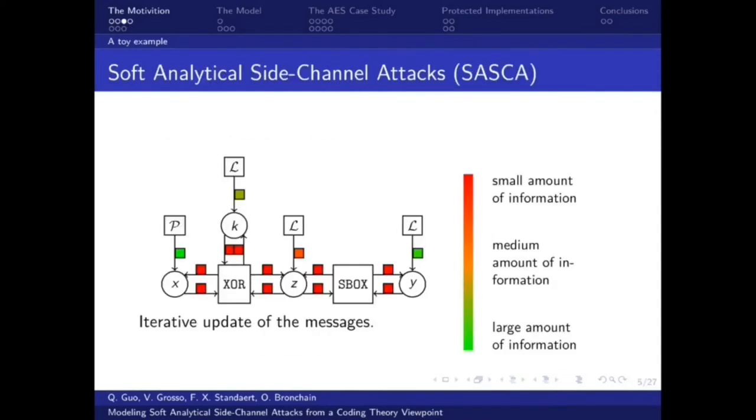Recently a very powerful side channel attack called soft analytic side channel attack was discovered. The basic idea is to iteratively update the messages. Let's also take this computational graph as an example. At the starting stage we may have a large amount of information on some values. For instance we know the plaintext p, plaintext x, and for this value y we may have a very large leakage but for this desired secret key we know a small amount of information. After the information propagation we know more about the intermediate values and finally we could recover the key.